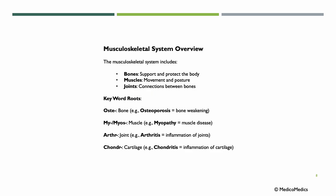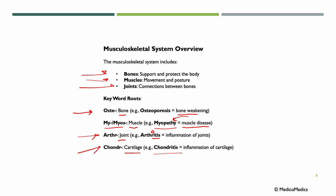Now let's look at the musculoskeletal system. The musculoskeletal system includes bones, muscles, and joints. Key word roots: OSTE means bone — for example, OSTEOPOROSIS means bone weakening. MYO means muscle — MYOPATHY means muscle disease, as PATHY comes from pathology. ARTHR means joints — adding -ITIS, we have ARTHRITIS, inflammation of the joints. Note we do not add the combining vowel O before -ITIS since it begins with a vowel. CHONDR means cartilage, so CHONDRITIS means inflammation of cartilage.